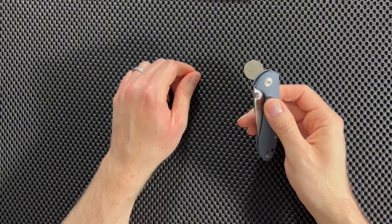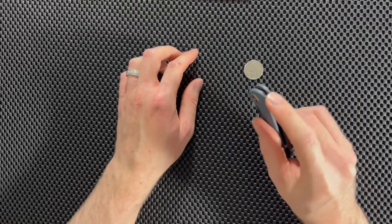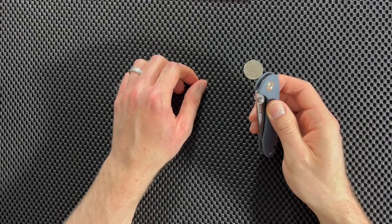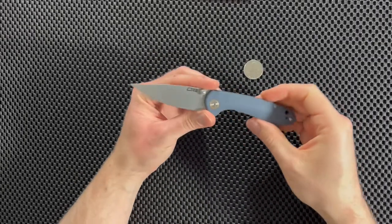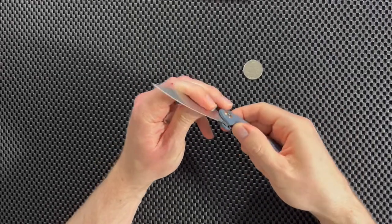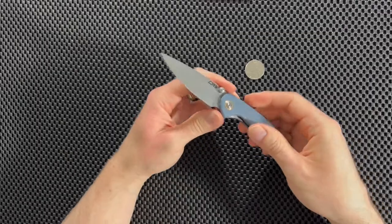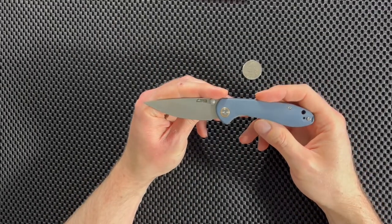And then to deploy the blade, you have thumb studs on both sides. You don't have a flipper on this knife. A flipper would have been cool. I like flippers, but the thumb studs are also good. And you can simply flick it open. Or you can just pull it open if you want to, slowly. Either way, it's more fun to flick it open, especially if you're fidgety like me.